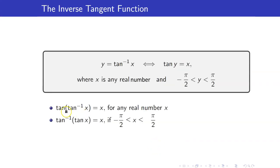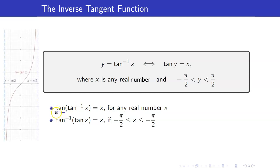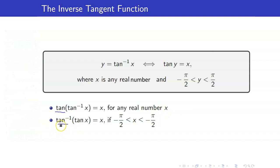Just like with the inverse sine and inverse cosine, we can perform cancellations as long as certain conditions are satisfied. Tangent of tangent inverse x equals x. We can also cancel in the other direction if the quantity lies in the range of tangent, which is the set of real numbers. For tangent inverse as the outermost function, the result is an angle between negative pi over 2 and pi over 2.